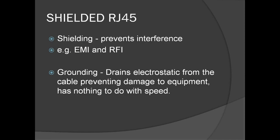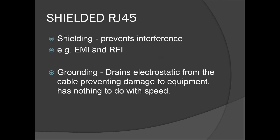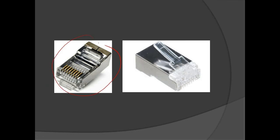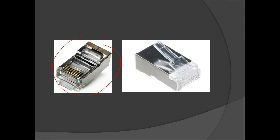We have also the shielded RJ45. Shielding prevents interference — EMI and RFI, or electromagnetic interference and radiofrequency interference. The grounding drains electrostatic from the cable, preventing damage to equipment, and has nothing to do with speed. This metallic shielded RJ45 is used mostly for outdoor connectivity, to prevent electromagnetic and radiofrequency interferences.